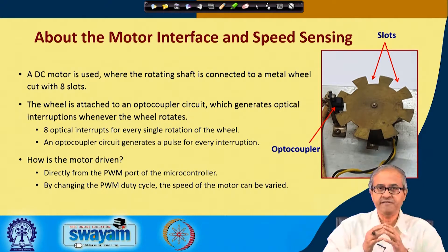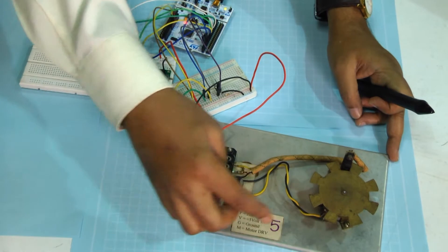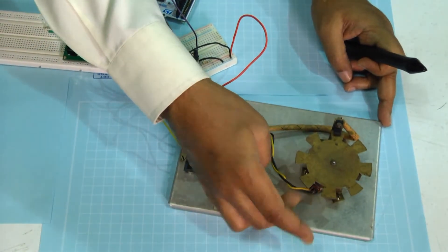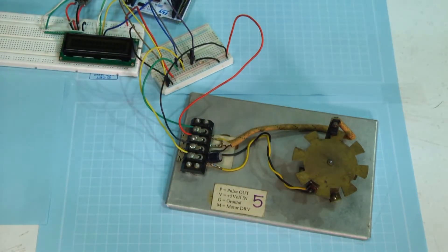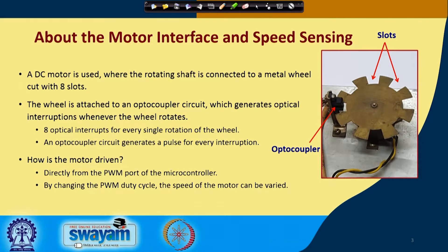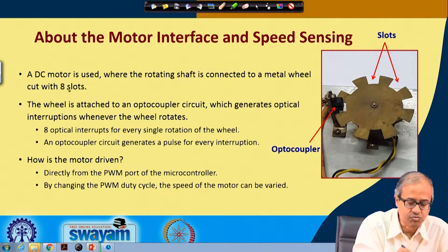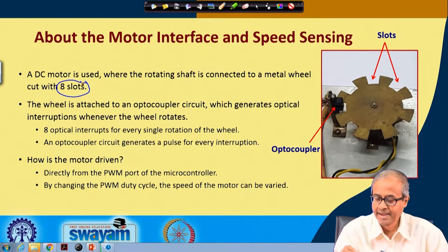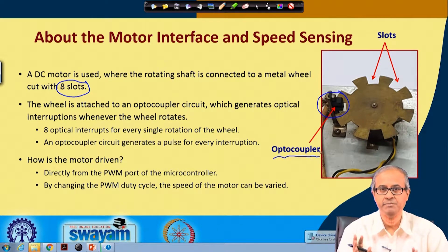The motor interface I shall be showing you in this experiment — you can see there is a motor with a wheel connected to the shaft which can rotate. In the picture on the right, there are 8 slots cut into the rotating metal wheel, and on the side there is an arrangement which is an optocoupler circuit.